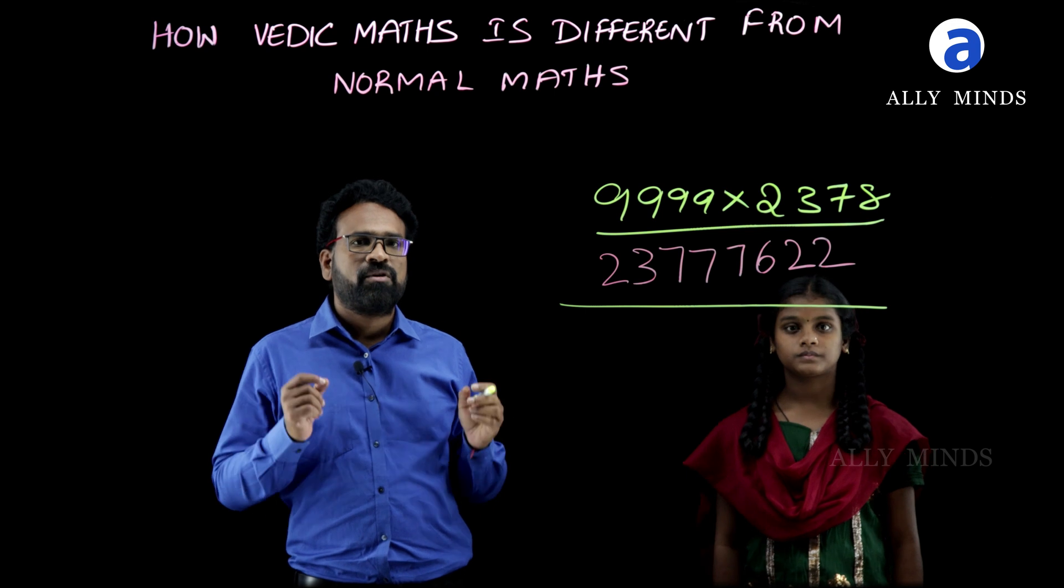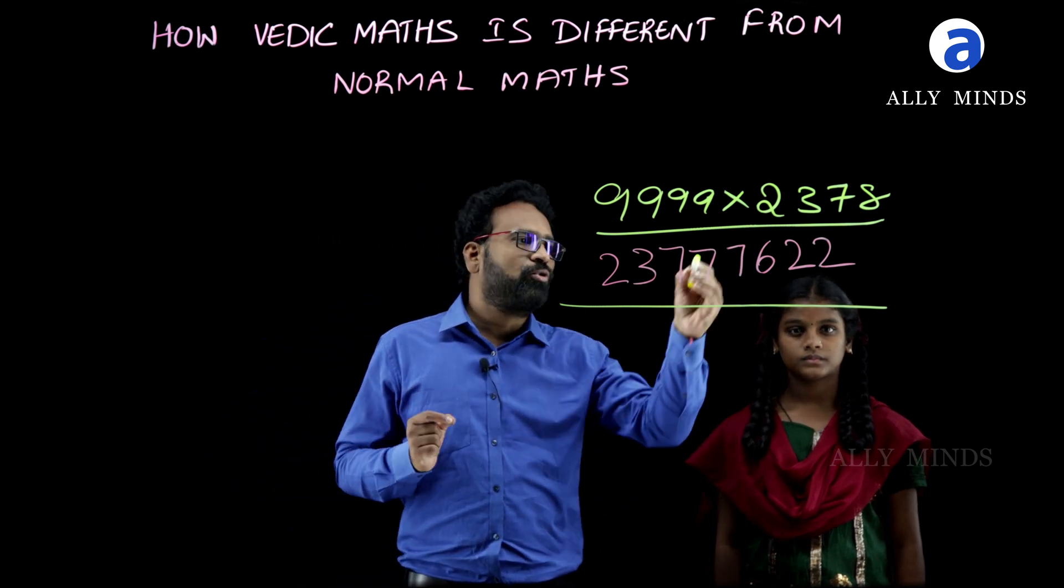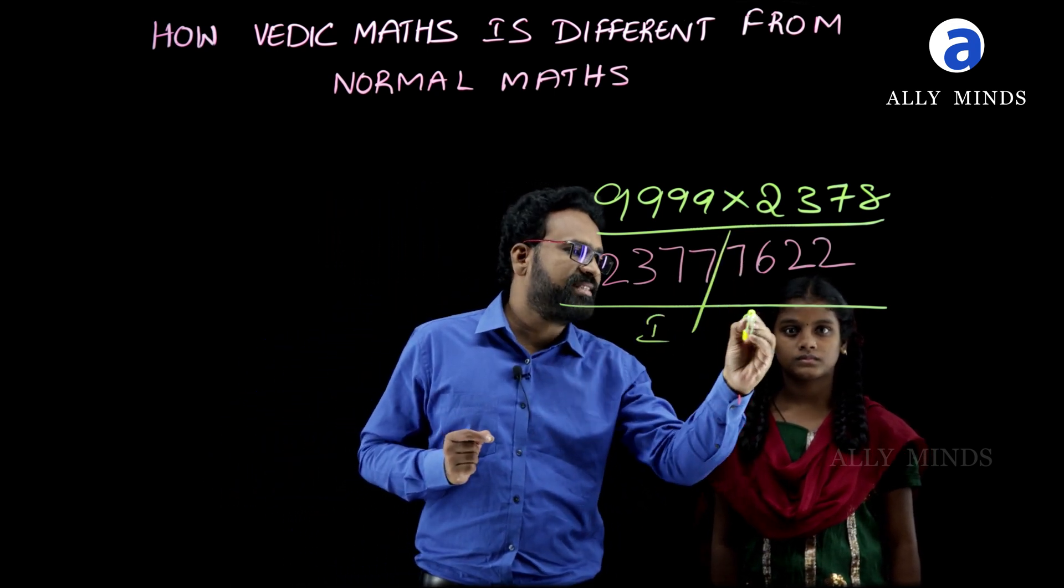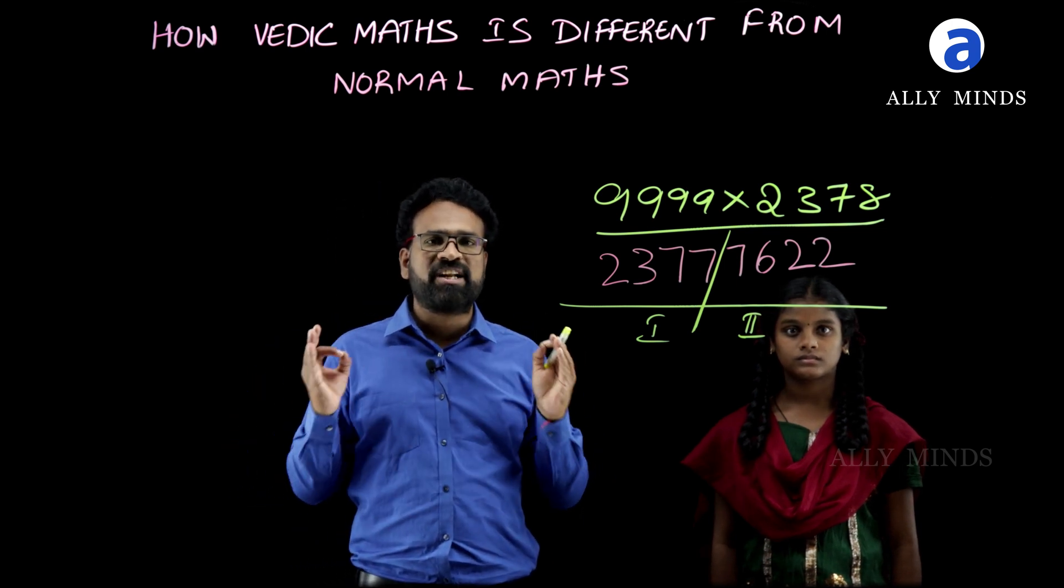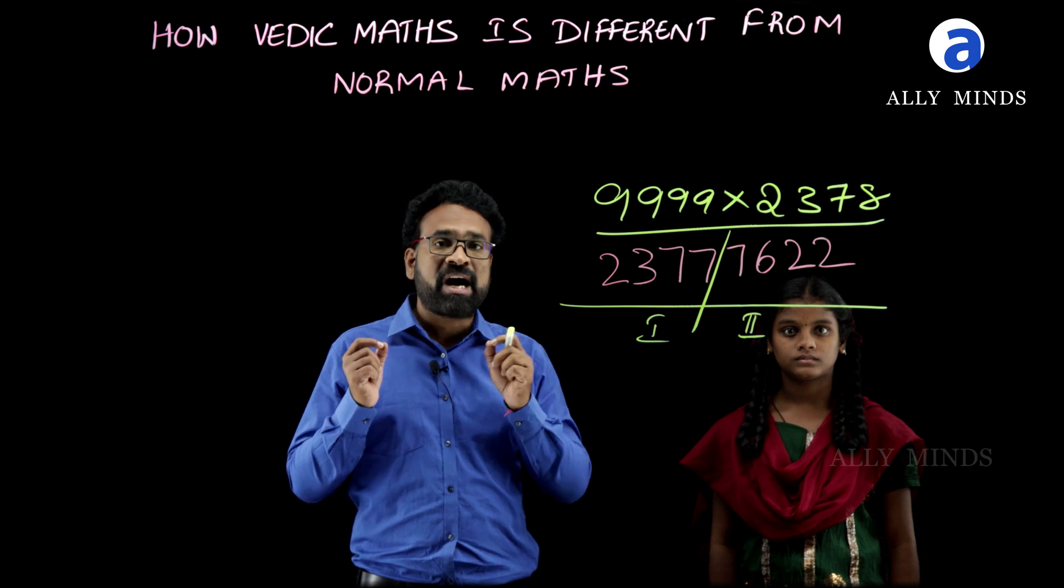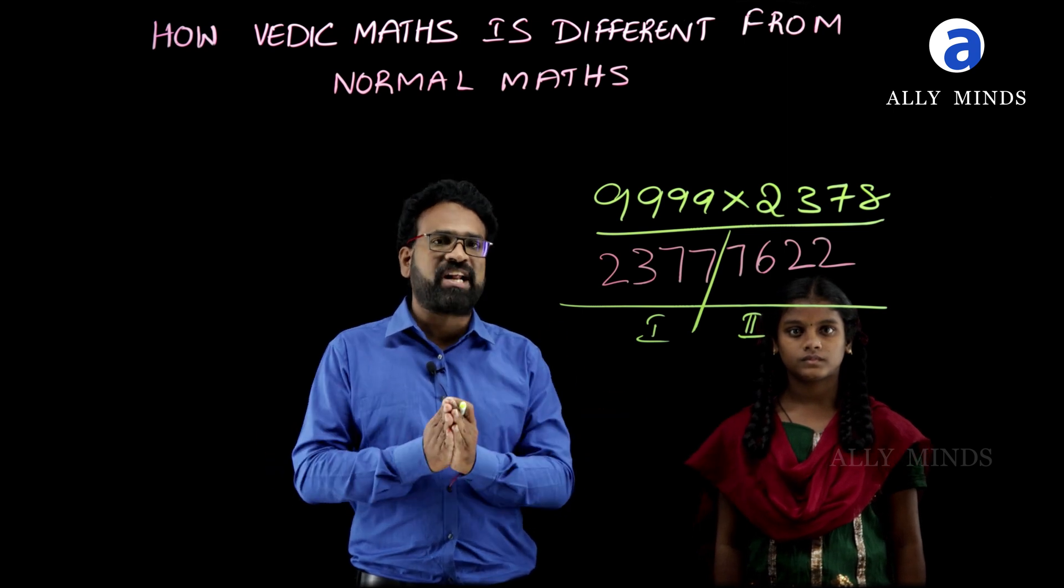See how simple it is. First of all, we get this answer in two parts: first part and second part. For the first part, we have to apply Eka Nooniena Purvenam. Here Eka Nooniena Purvenam means we have to take one less than the number what we are having.